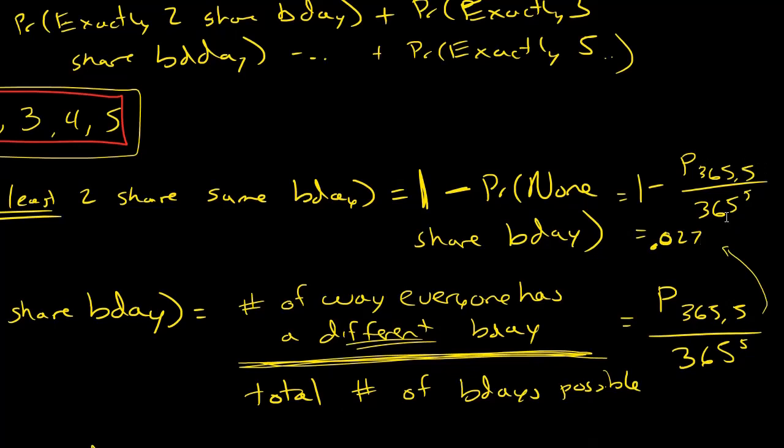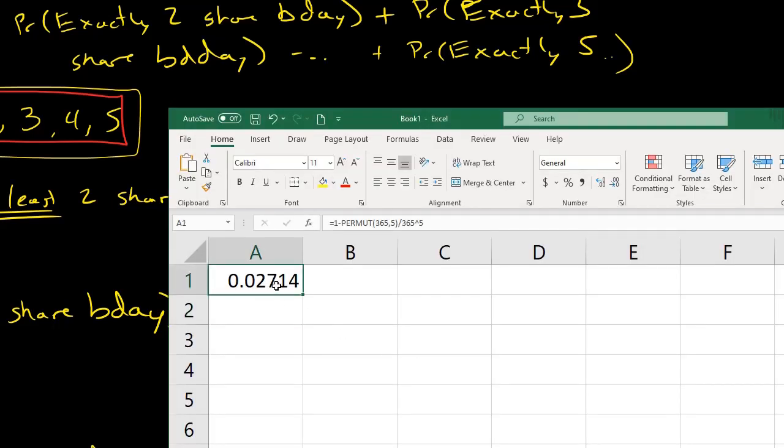It would be exactly the same, except instead of picking out five and taking 365 to the fifth power, you would be taking out 10 and taking 365 to the 10th power. So actually let's see how that changes this calculation. Go up here to the formula bar and change that five to a 10, and change that to a 10, press enter, and we can see the probability gets much higher—closer to 12 percent. Better change that to percentage. So 11.7 percent chance if we had 10 people that at least two of them would have the same birthday, and of course it continues to go up as you have bigger and bigger groups.